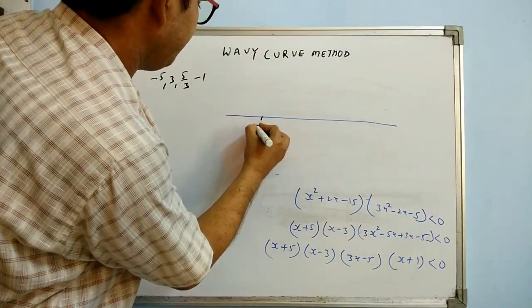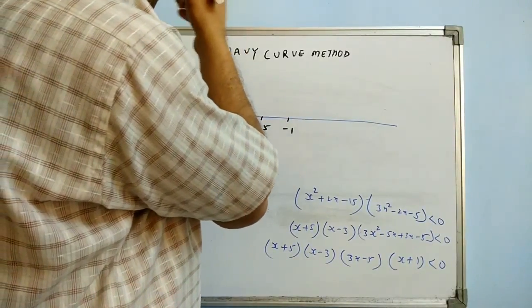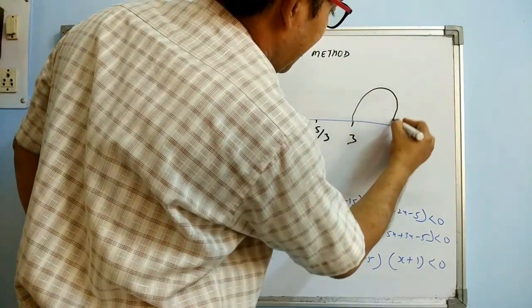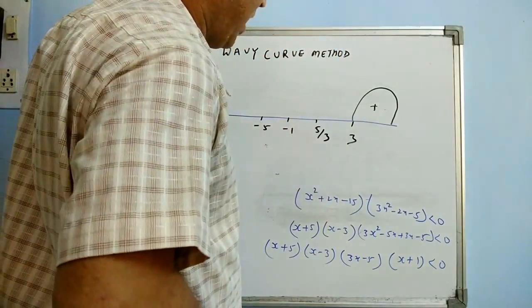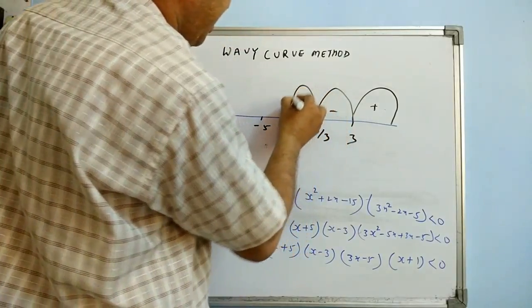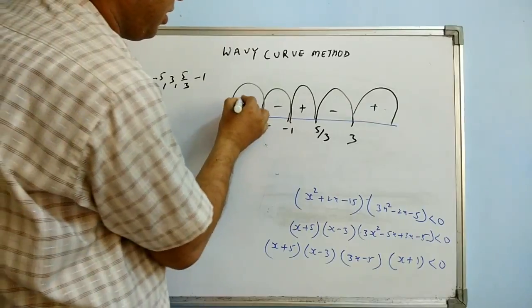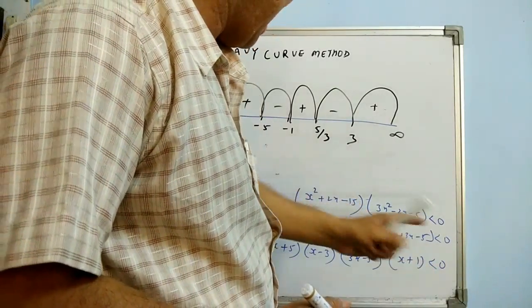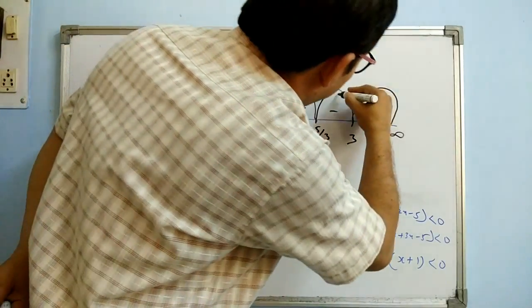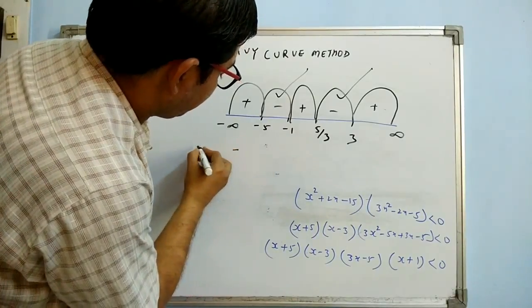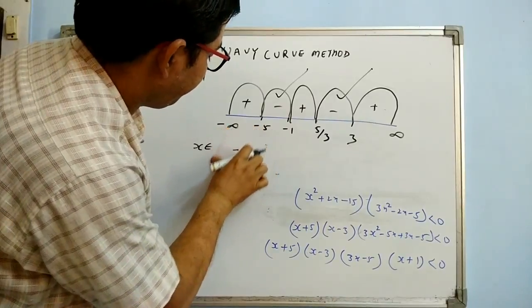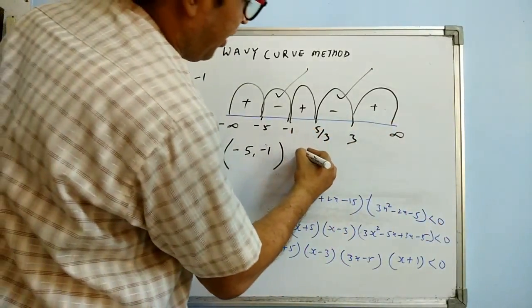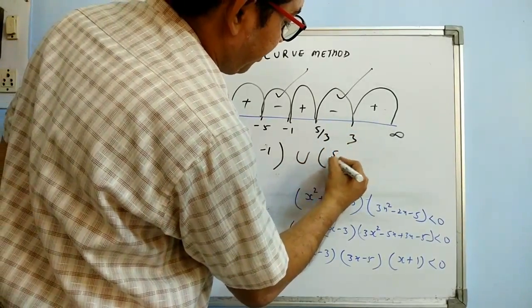Plot the critical points on the number line from left to right: -5, -1, 5/3, 3, with -∞ on the left and +∞ on the right. Draw semicircles: the first interval (rightmost) is positive since the coefficient of x² is positive, then alternate: negative, positive, negative, positive. Since we need the expression to be less than 0, pick the negative intervals: x ∈ (-5, -1) ∪ (5/3, 3), all exclusive since there is no equal-to sign.